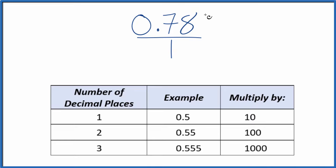What we need to do is get this to be a whole number, this 0.78, and we have two decimal places. If we have these two decimal places, we're going to multiply that by 100. That'll give us a whole number. So 100 times 0.78, that equals 78. And now we have a whole number.